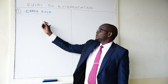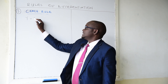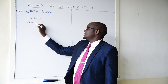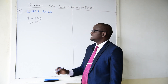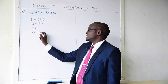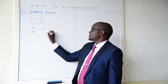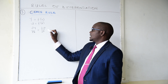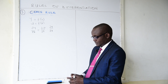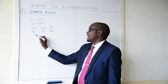Let us look at the chain rule. For instance, you can be given y as a function of u, and u is a function of x. In such a case, when you want to find dy/dx, the rule says that dy/dx equals du/dx multiplied by dy/du. This u will cancel and you go back to dy/dx.